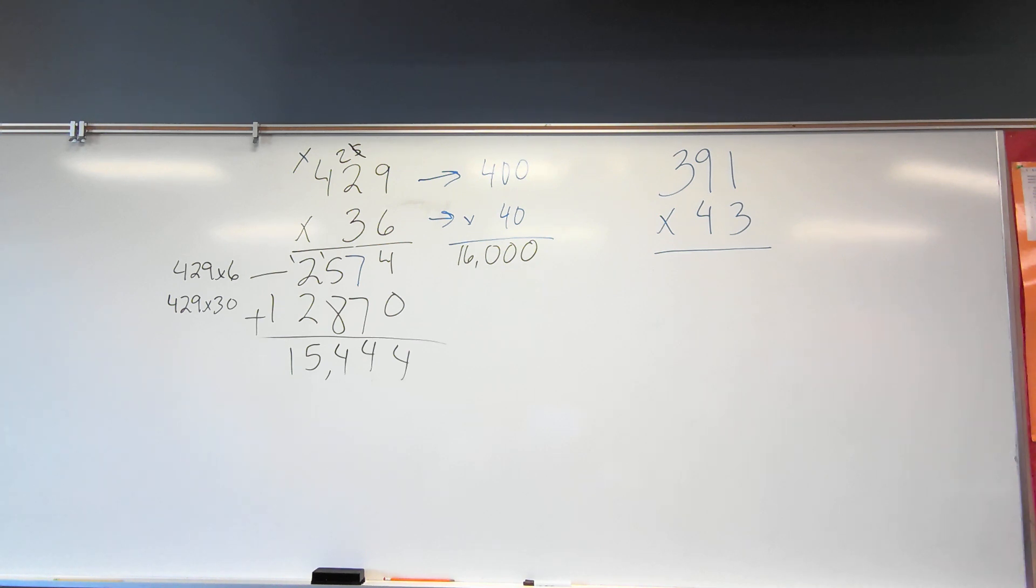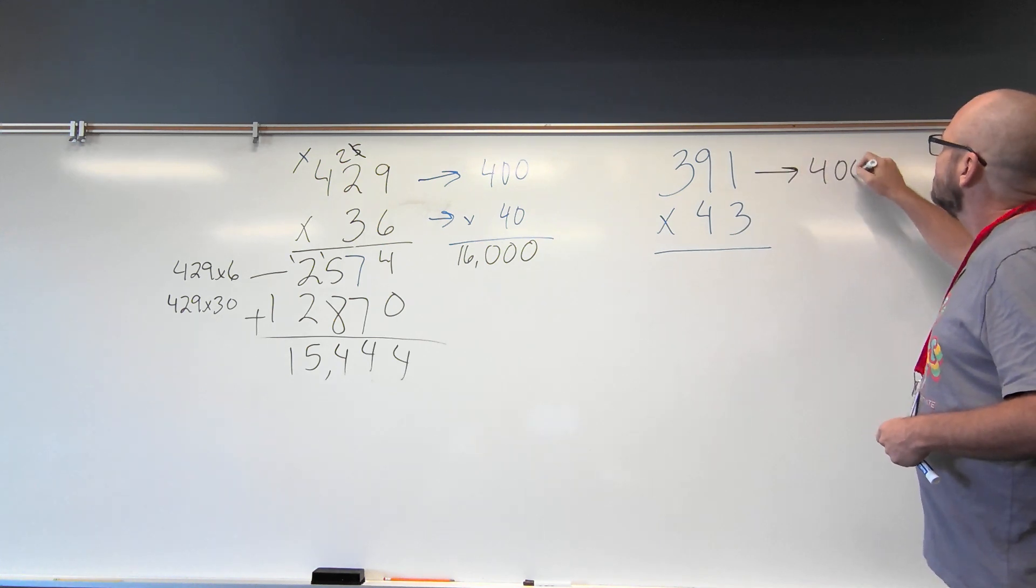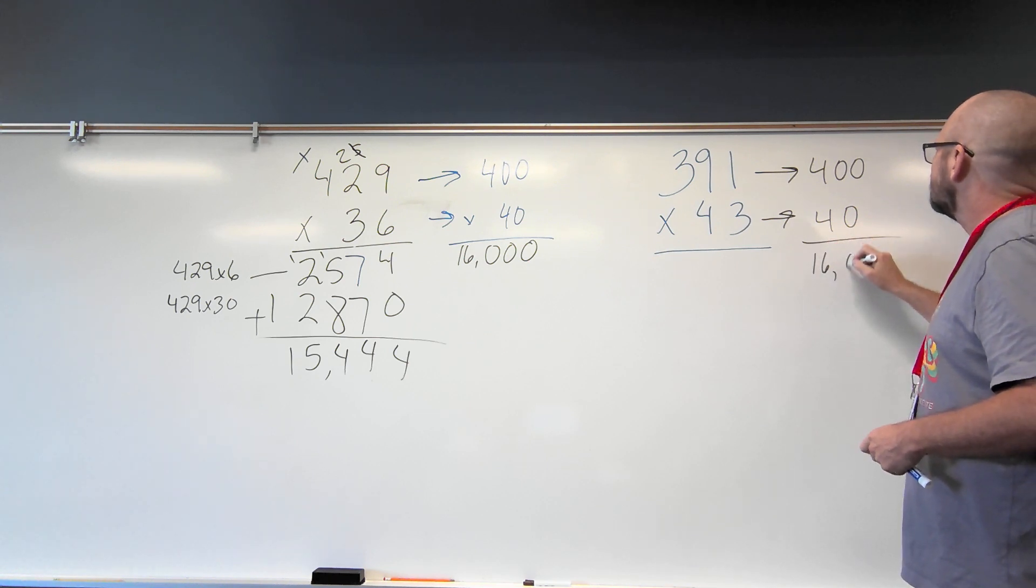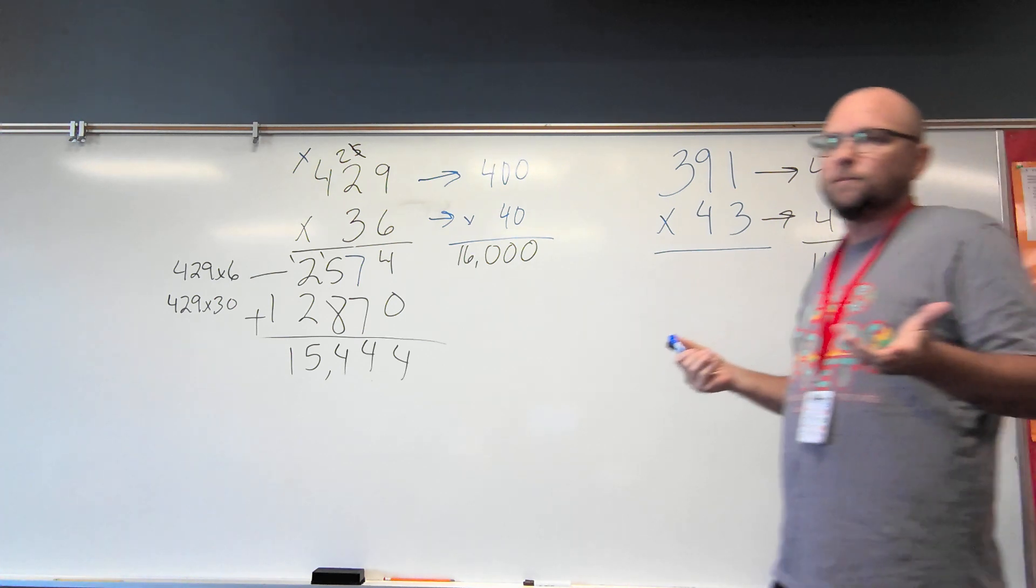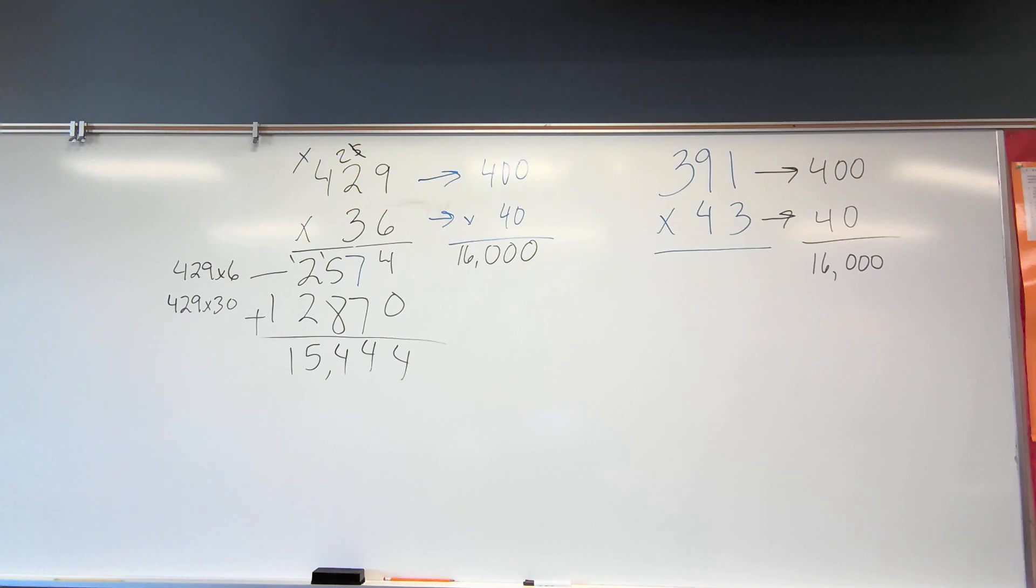Now this second one, 391 multiplied by 43, I could estimate this the same way because this is close to 400, this is close to 40. And so I should get 16,000. My estimate should be somewhere in that area. Right, Joe? Yeah. See, Joe agrees with me. Joe knows. Just like Bo, Joe knows. Just like Joe, Bo knows.